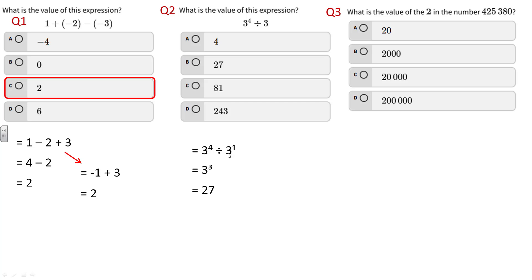The other way you could do this is evaluate 3 to the 4th and 3 to the 1st. Three times three times three times three - four threes multiplied together - is 81, divided by 3 is 27.